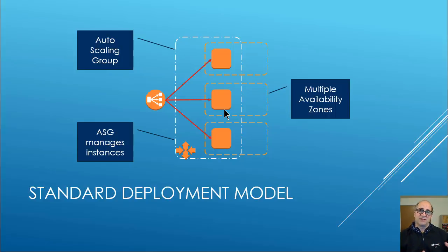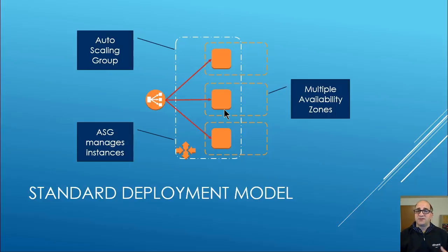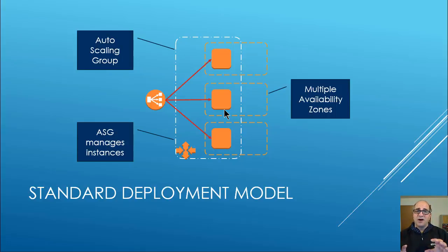We create an autoscale group, tell it what size we want, and it goes and installs all the machines for us — we do this through CloudFormation templates. If any of those nodes need to be terminated or terminate by accident, the autoscale group will make sure they come back. This is the standard deployment model. I really wanted to talk about the EC2 instances themselves and the autoscale group here.